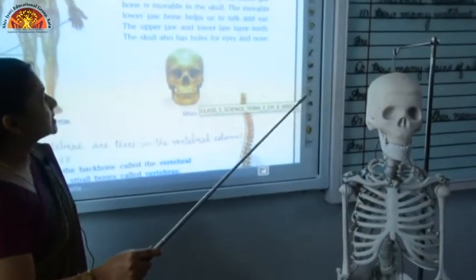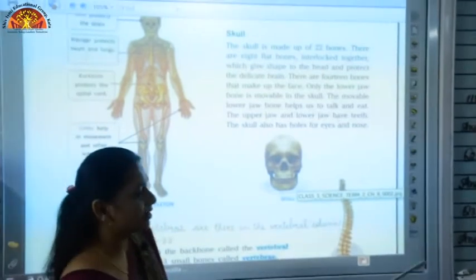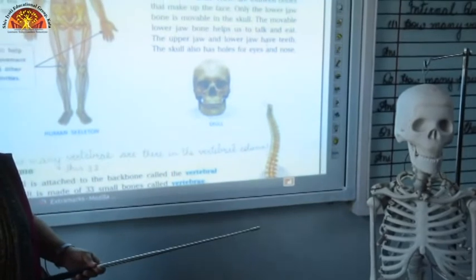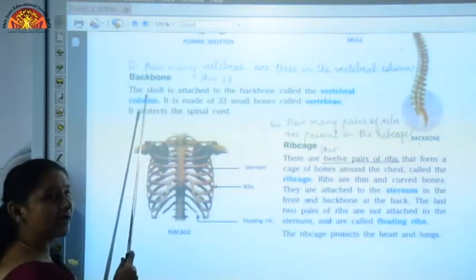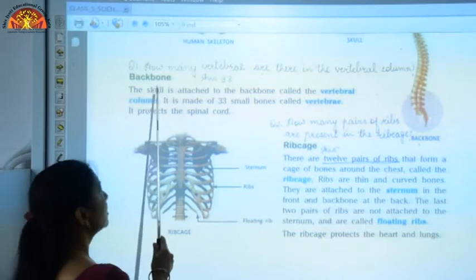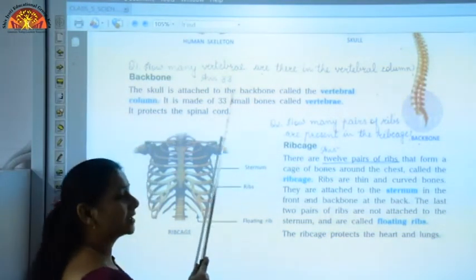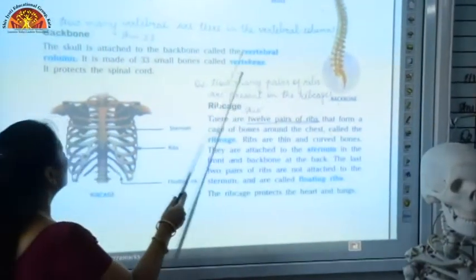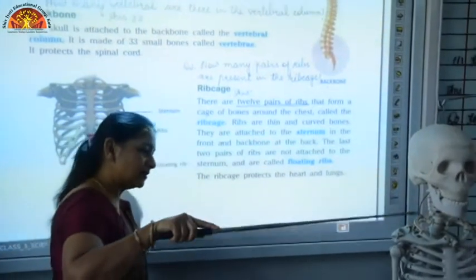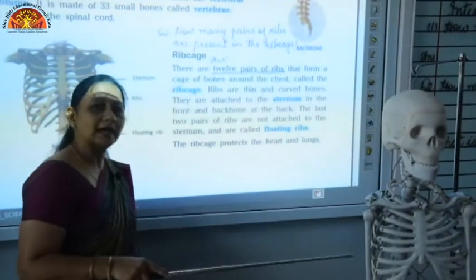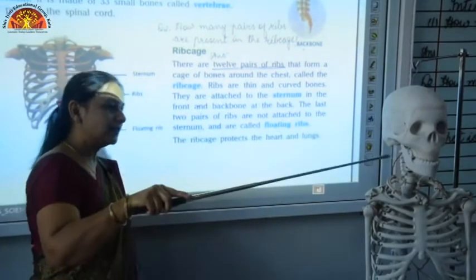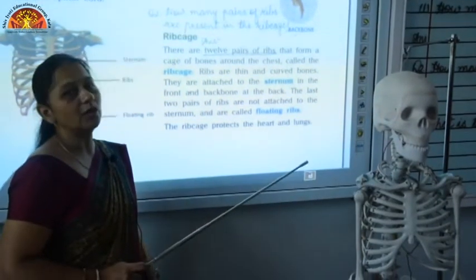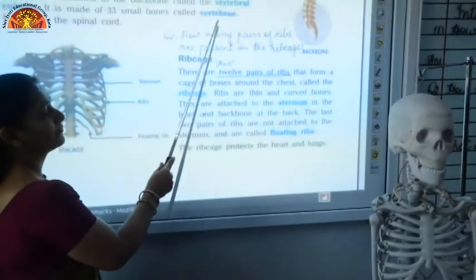That was about the skull. Next we have the backbone, or the vertebral column. The skull is attached to the backbone, which is also called the vertebral column. As you can see, this vertebral column is made up of 33 small bones which are called vertebrae.